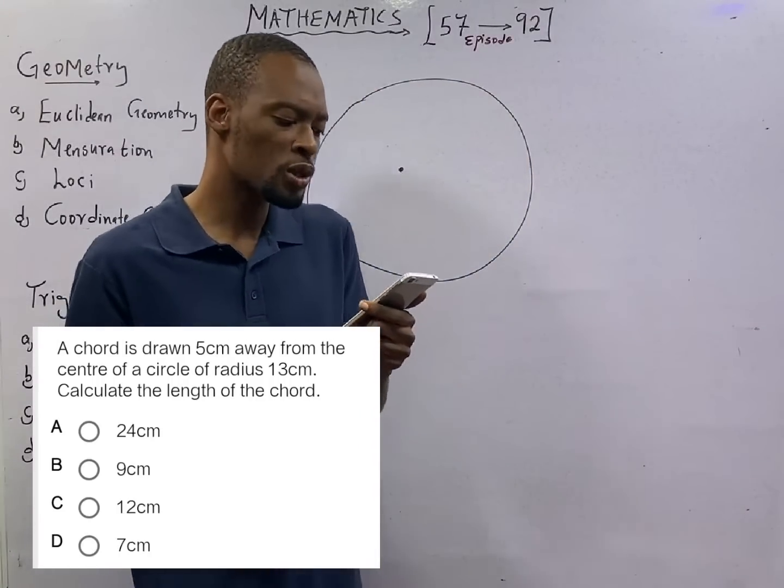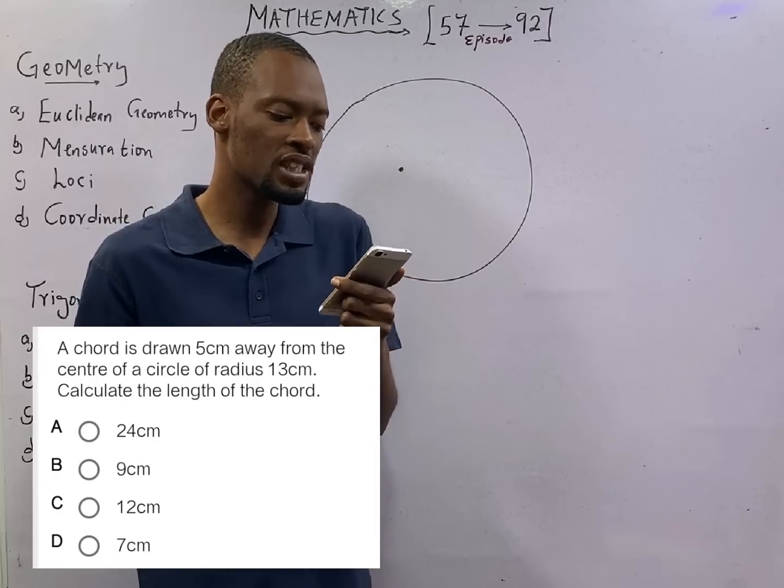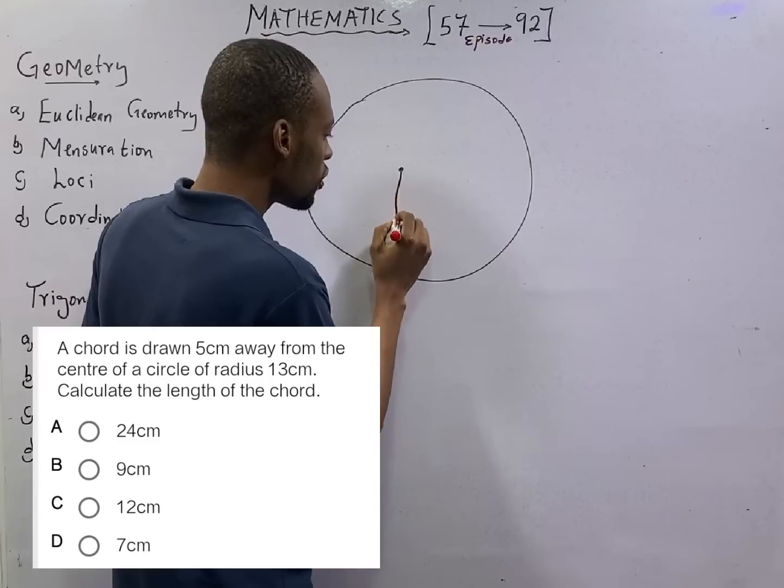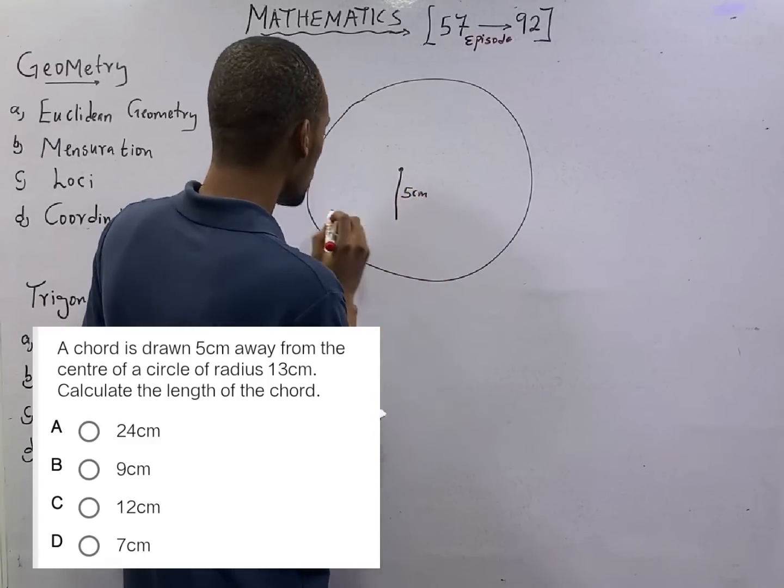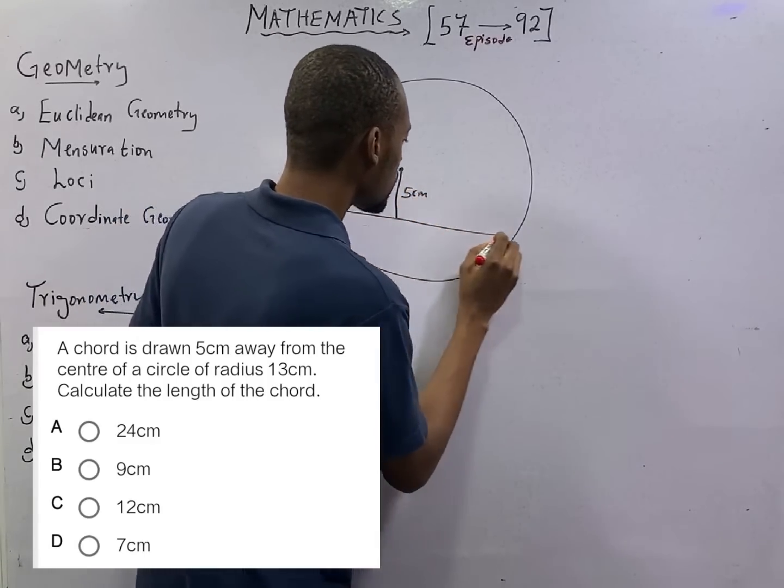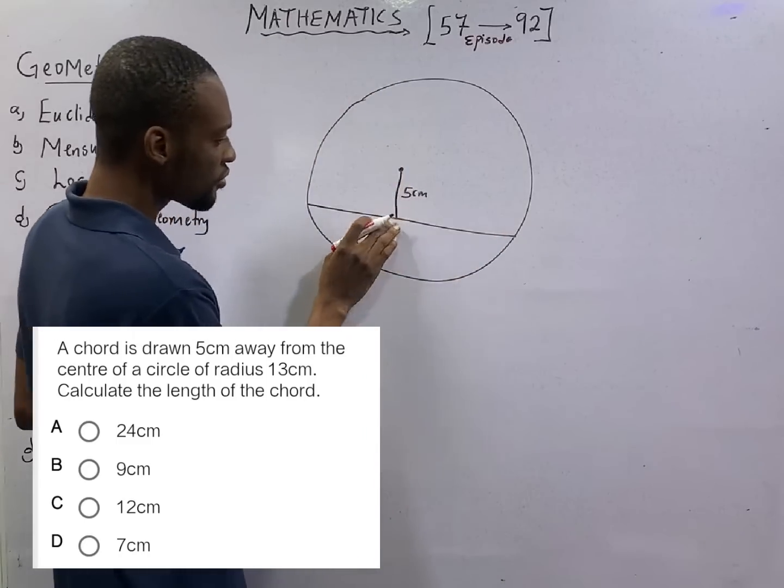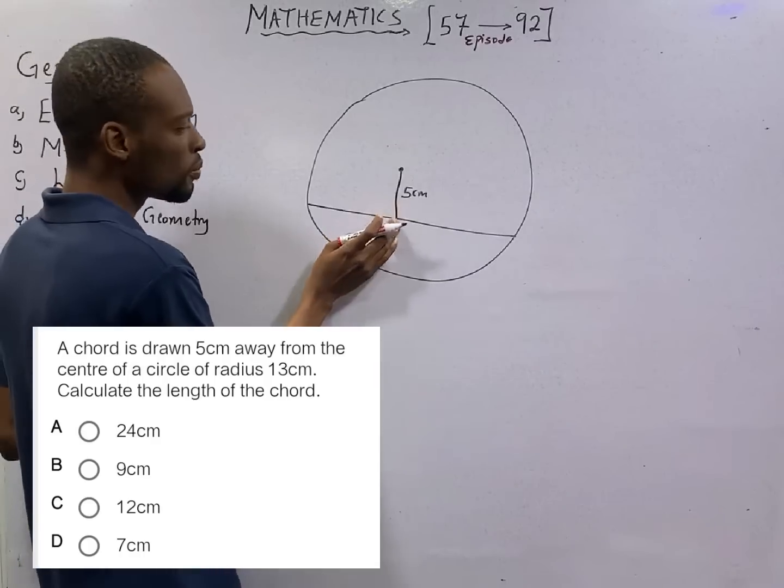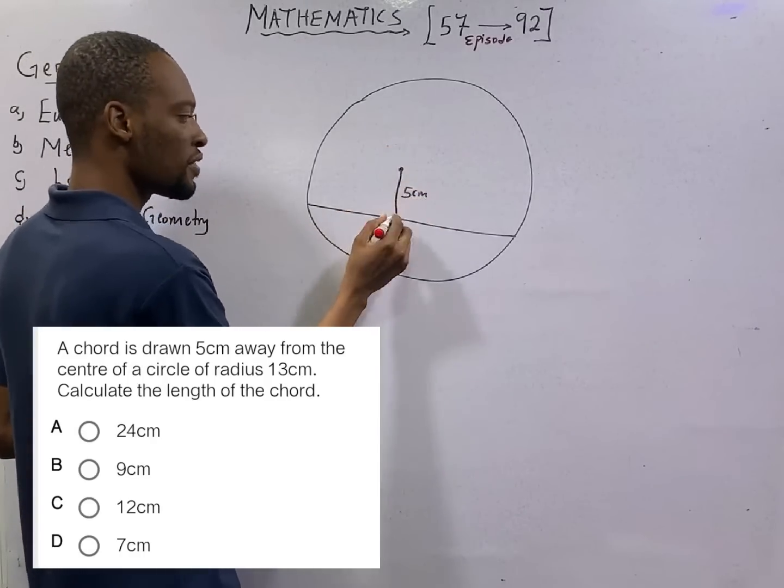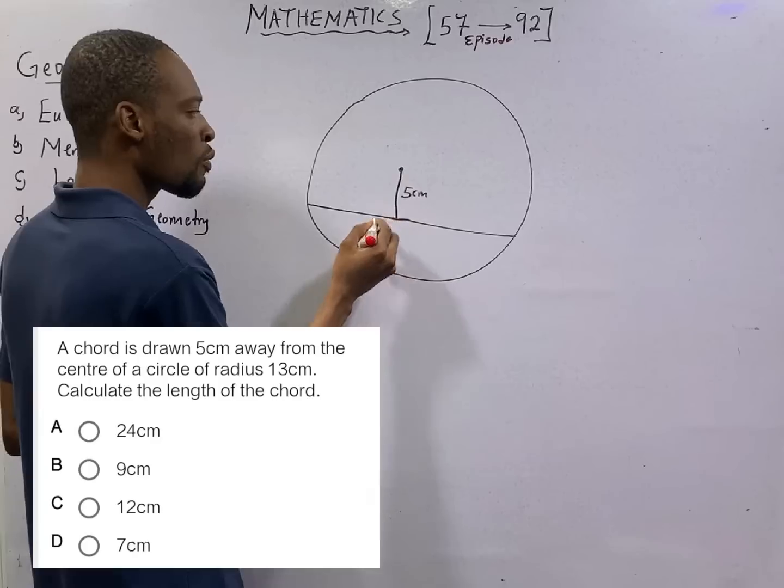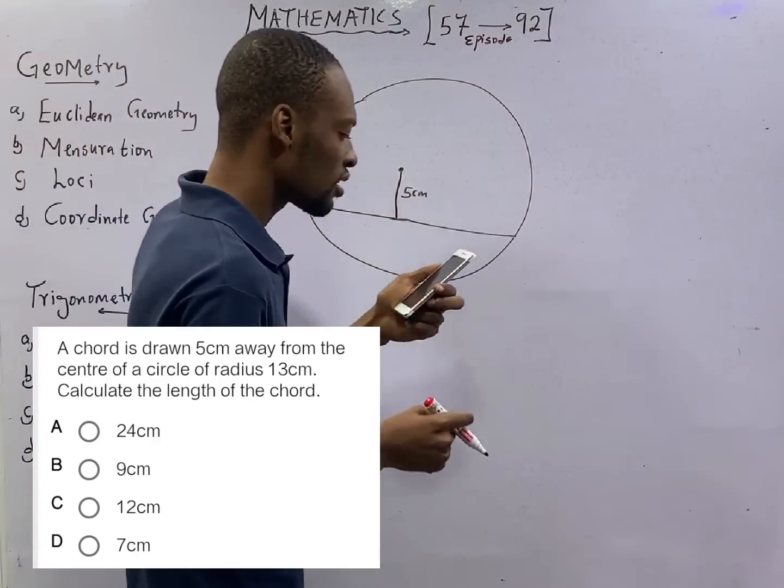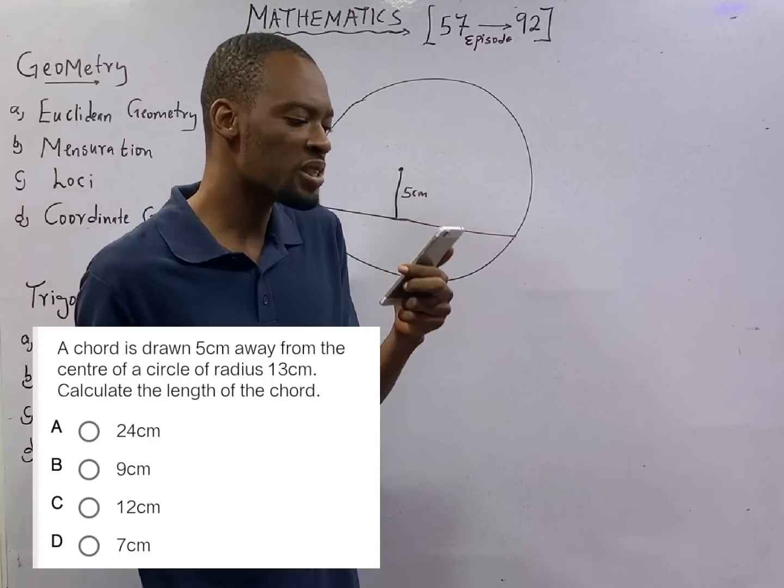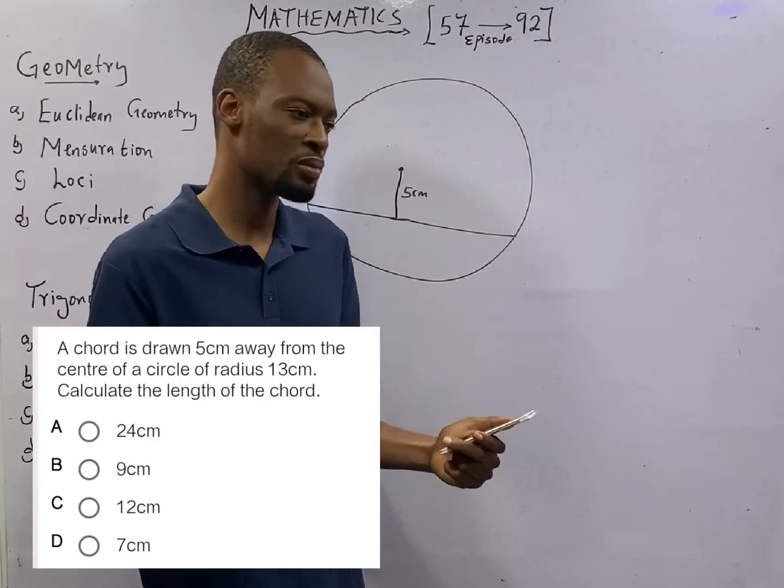So this chord is drawn 5 cm away from the center of a circle. This is the center. If you go down 5 centimeters here, you will reach the chord. The distance from the chord to the center is 5 centimeters. We are also told that the radius of the circle is 13 centimeters.